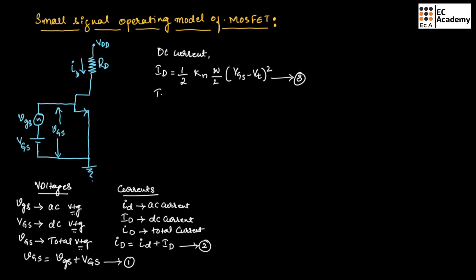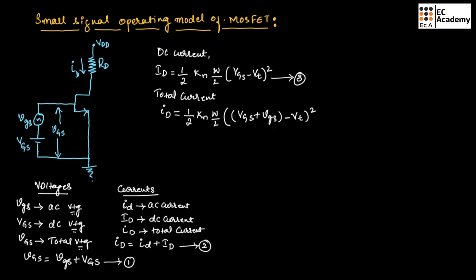The total current small i capital D can be written as (1/2) · KN · (W/L) · (VGS + vgs − VT)². Here we can apply the formula (A + B − C)², taking capital VGS as A, small vgs as B, and VT as C. We can expand (A + B − C)² as A² + B² + C² + 2AB − 2BC − 2CA.